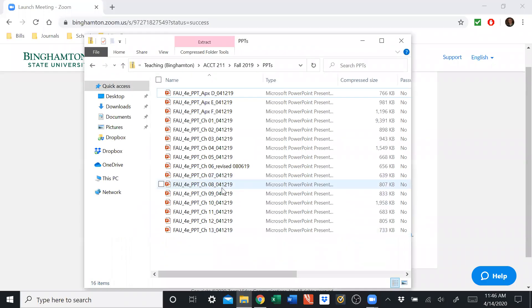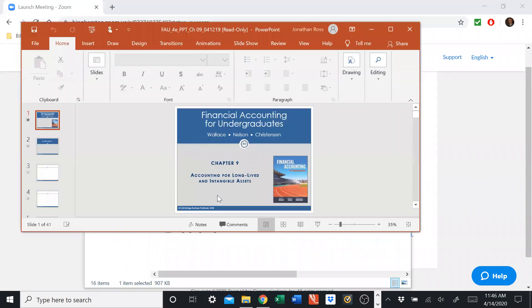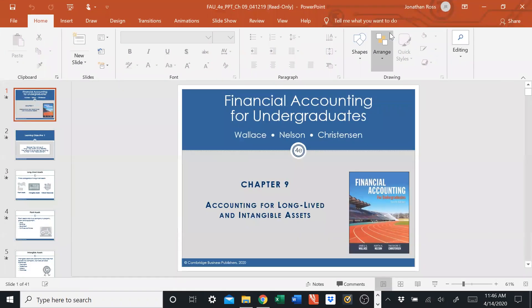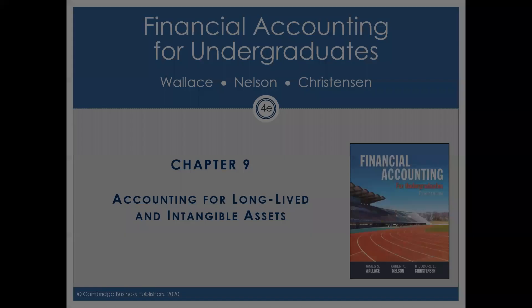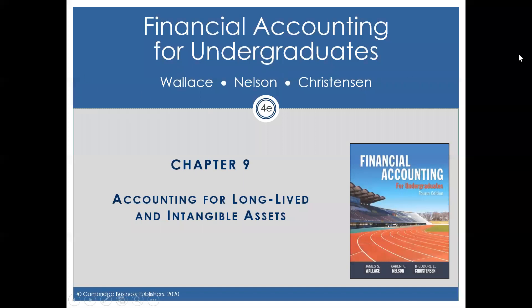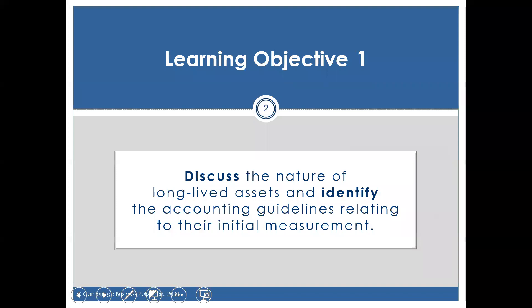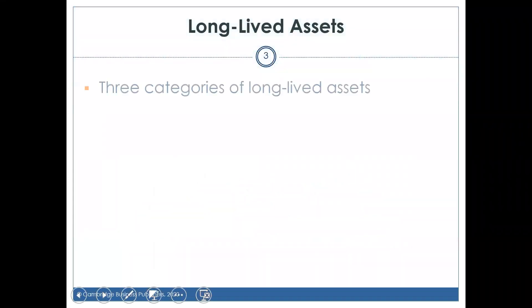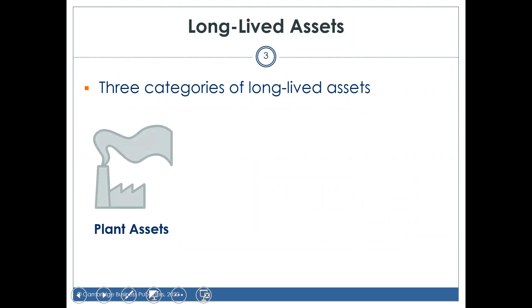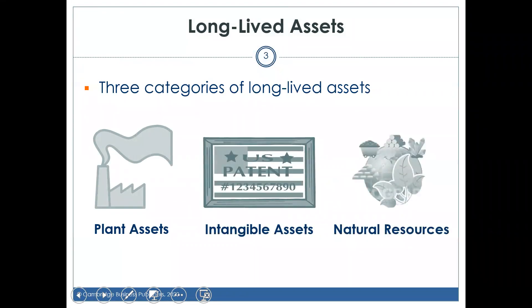Alright, you should be able to see my screen. Let's go to Chapter 9 and talk about long-lived assets. Chapter 9: accounting for long-lived and intangible assets. There are three categories of long-term assets: plant assets, intangible assets, and natural resources. We'll go through each of these.